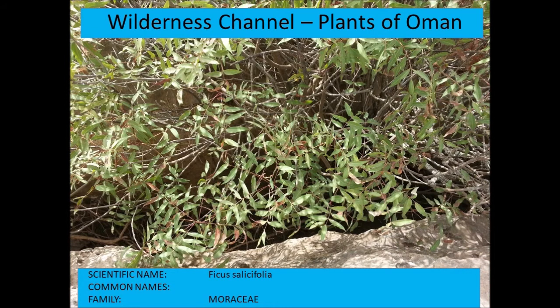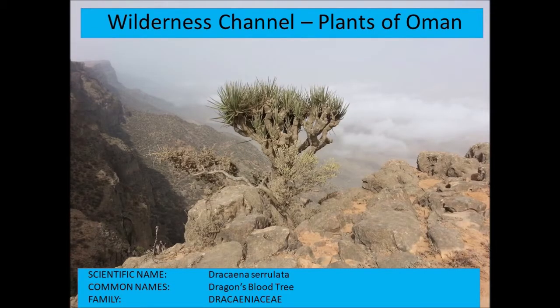Ficus salicifolia has been mentioned. Dracaena serrulata — the dragon's blood tree — from the Dracaenaceae. It's called that because it has a red sap, called cinnabar in the past, which was used medicinally in ancient times. This specimen is on the Dhofar escarpment.